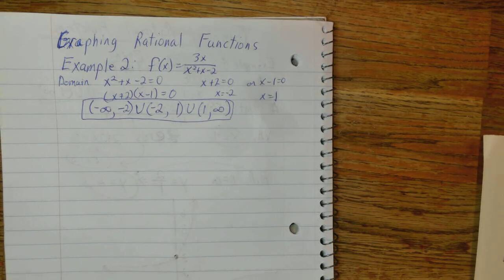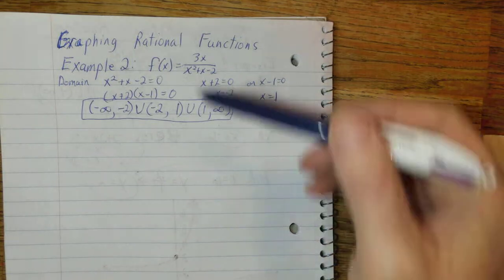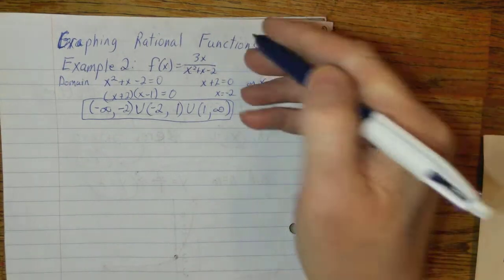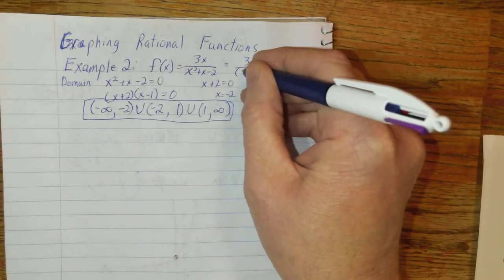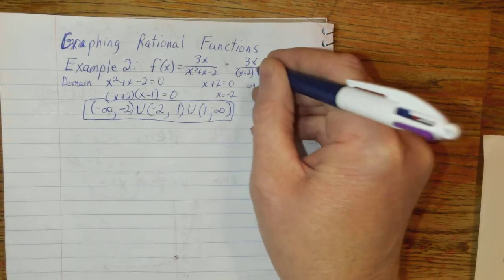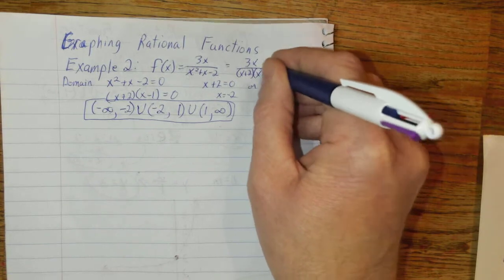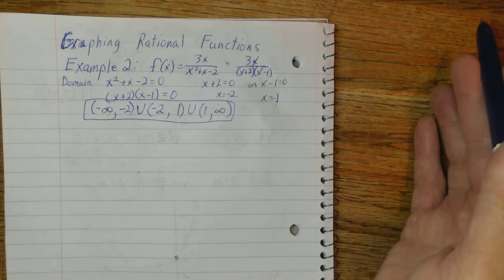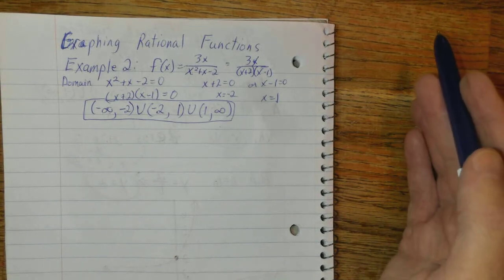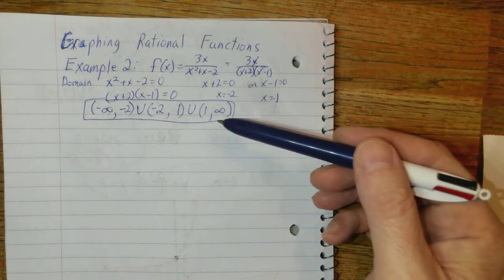We are going to simplify, if possible. And this is 3x over, I factored it, so let's write the factored form. And the factored form might be coming in. There's nothing going to cancel there, so it's already simplified, which means there's not going to be any holes to deal with.